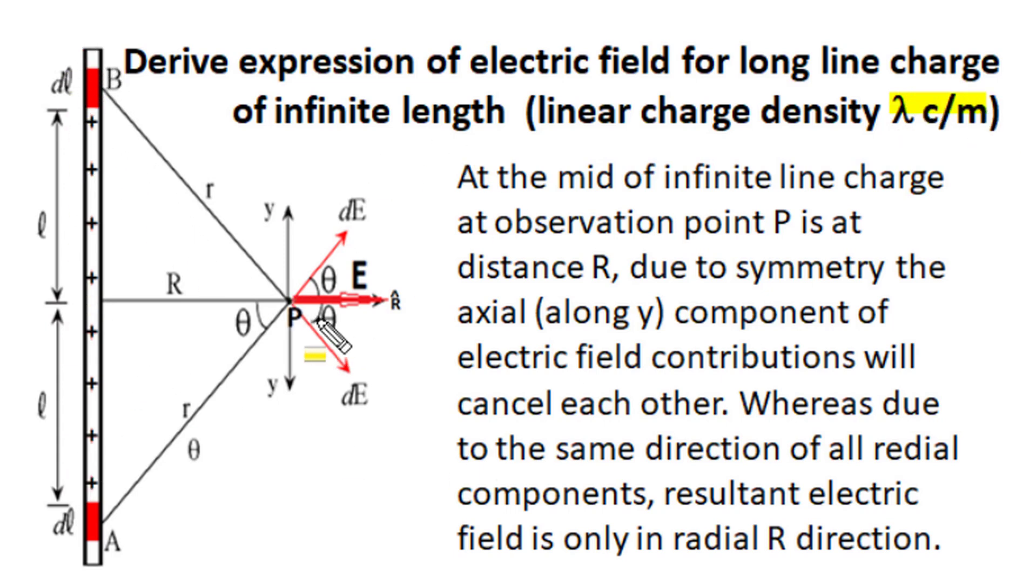Let's first understand the nature of electric field produced by infinite length uniform charged line at mid positions. We have to find out electric field at this point P. Our observation point is this point P and let's take symmetrically two elemental length components.